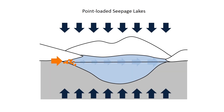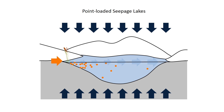Likewise, seepage lakes with a point nutrient source show decreasing nutrient concentrations away from the source. But, as more nutrients by comparison are removed near the source, the concentrations away from the source end up being even lower.